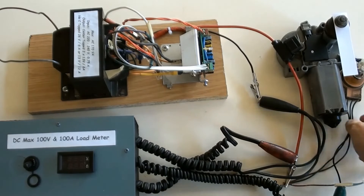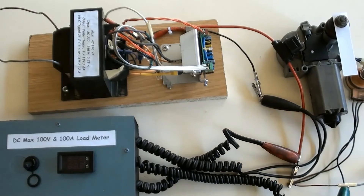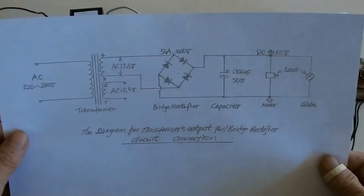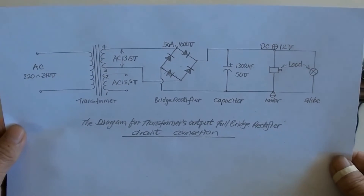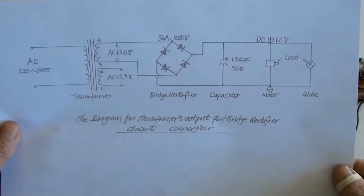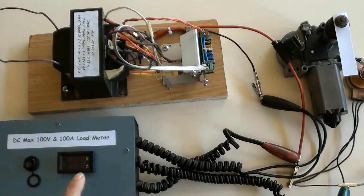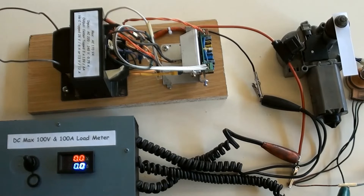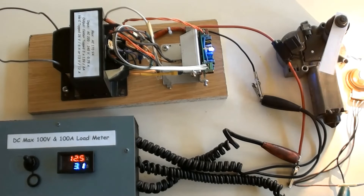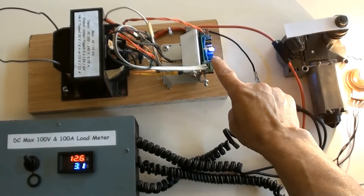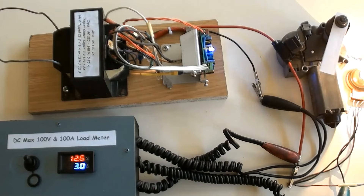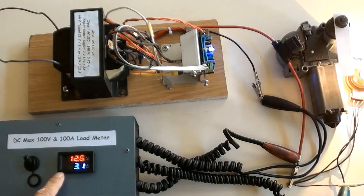This is a DC car's white motor and that is a DC 12 volt globe. This is the circuit connected diagram — a white motor and 12 volt globe. This is the load meter and it is ready. Switch on — white motor turns, globe lights, and LED turns on as well. The load meter has indicated DC 12.6 volts and current is 3.1 amperes.